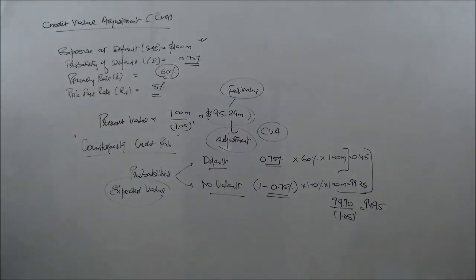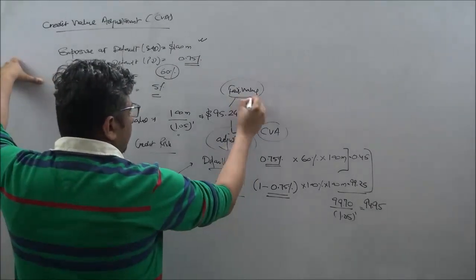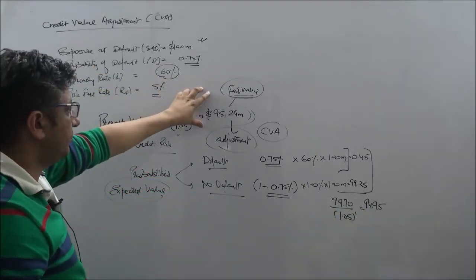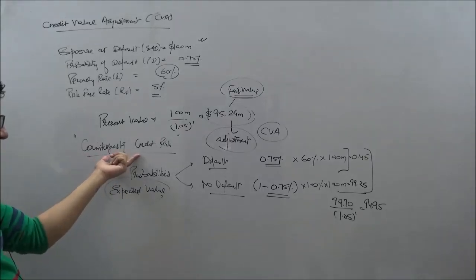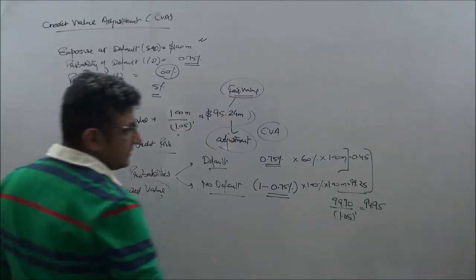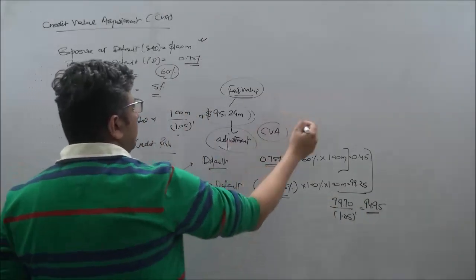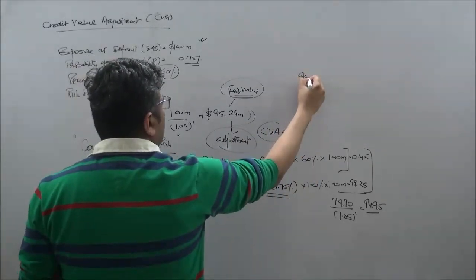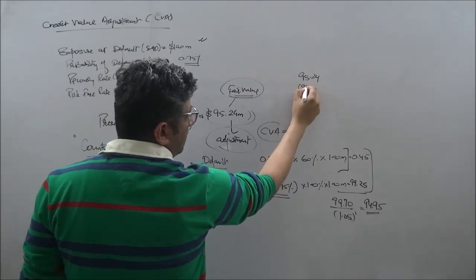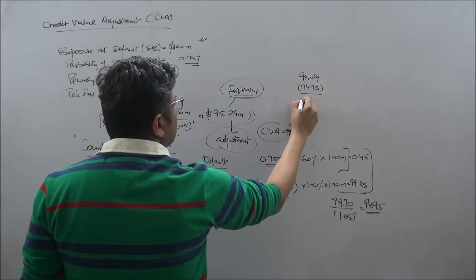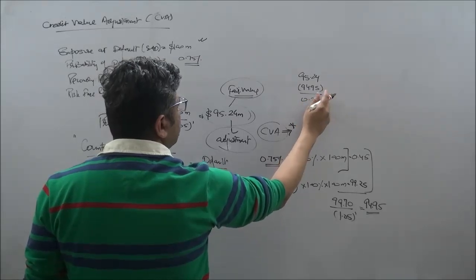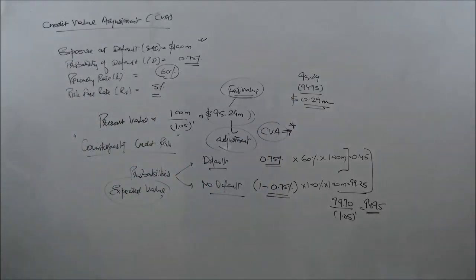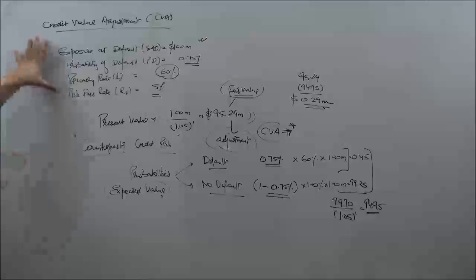What you are observing here is precisely that while the fair value without counterparty risk adjustments was 95.24, the value after taking into consideration those counterparty credit risk adjustments comes at 94.95, which means that we need to do a CVA, the credit value adjustment of 95.24.